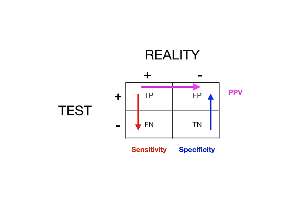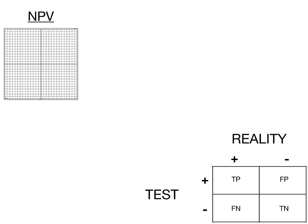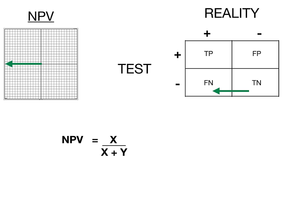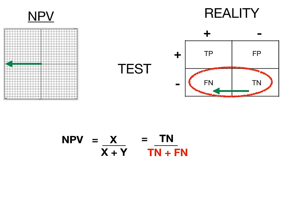Now for negative predictive value — it's probably no surprise that the arrow moves in the negative direction. Placing that arrow in the only remaining spot in the 4x4 table: negative predictive value equals x over x plus y. The numerator is where the arrow begins — true negative. The denominator is where it begins plus where it ends — true negative plus false negative. So negative predictive value equals true negative over true negative plus false negative.